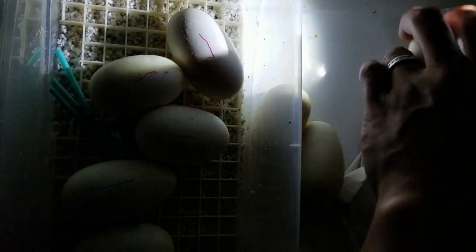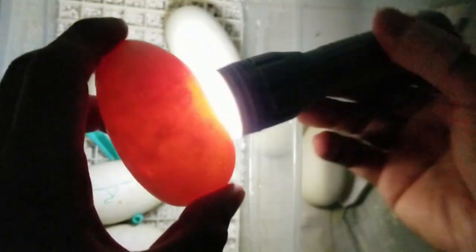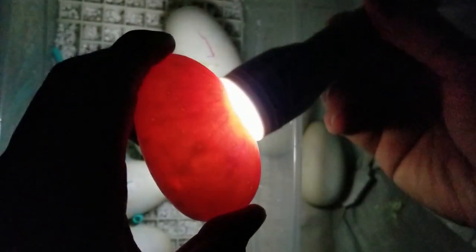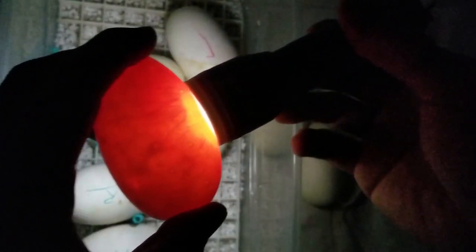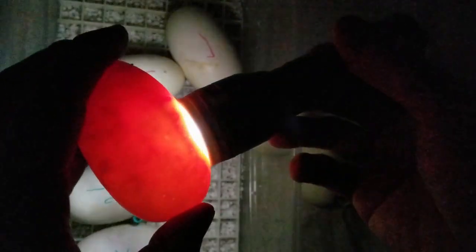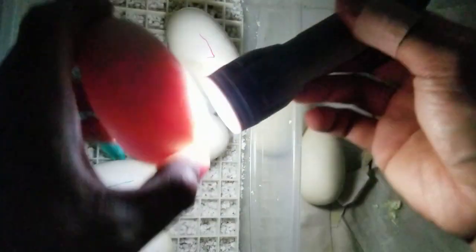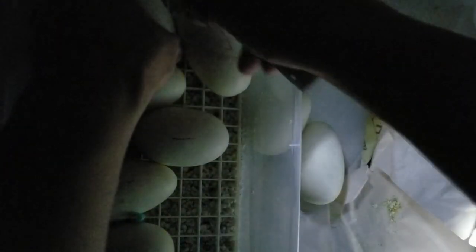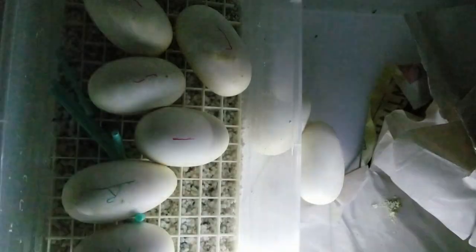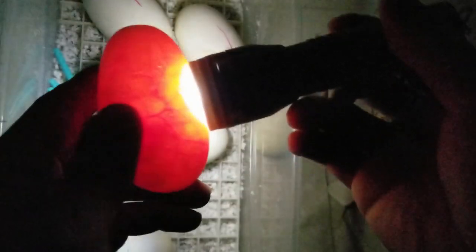Just double check that one. Yep, that one's all right. See how this is kind of yellowish and I can already see the embryos on the flashlight side. So there it is, right there in the center. Got a couple more to go.